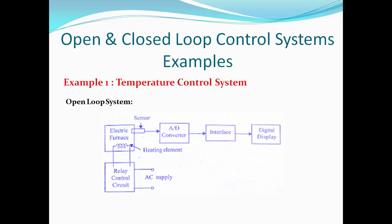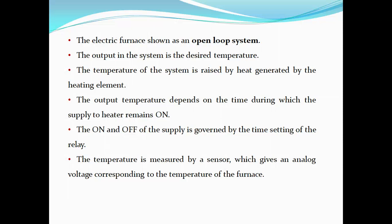We will see few examples of open and closed loop control systems. The first example is a temperature control system. We will see how this temperature control system operates under open loop mode, taking an electric furnace as the system. In this block diagram, we have a relay control unit, an electric furnace with a heating element, a sensor, an A2D converter, an interface, and a digital display. The output is the desired temperature, which is raised by heat generated by the heating element. The output temperature depends on the time during which the supply to the heater remains on, and the on and off of the supply is governed by the time setting of the relay.